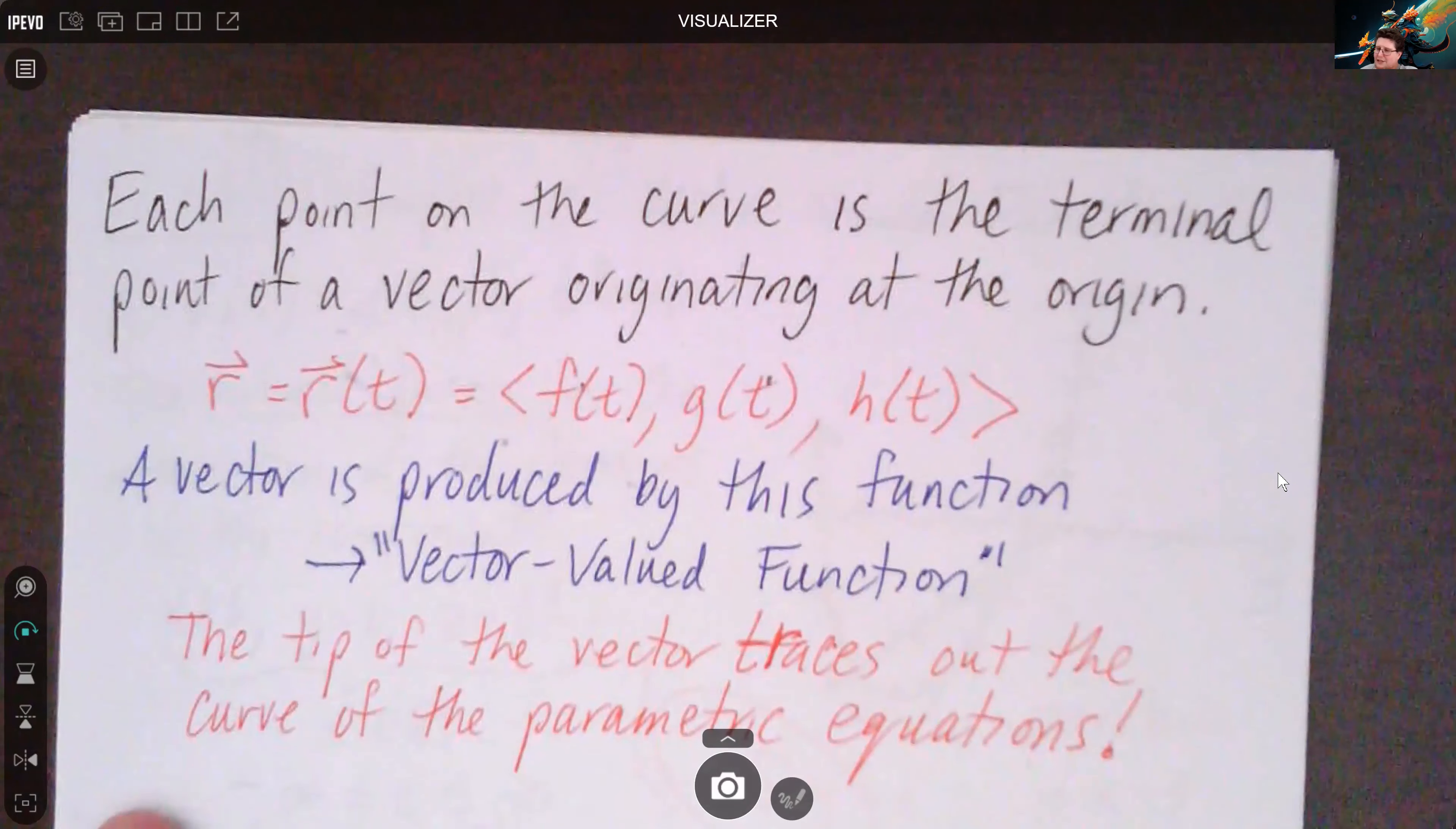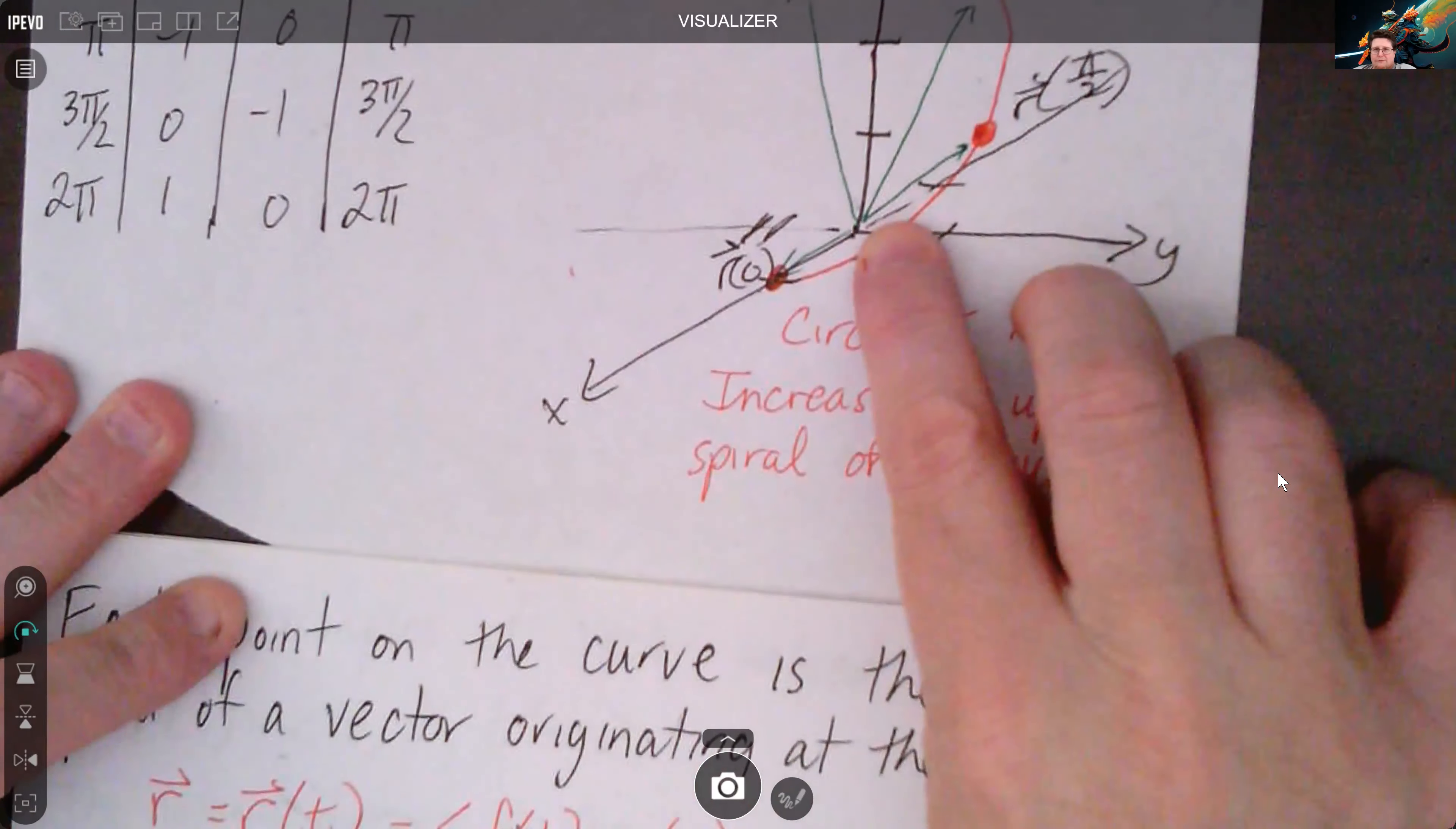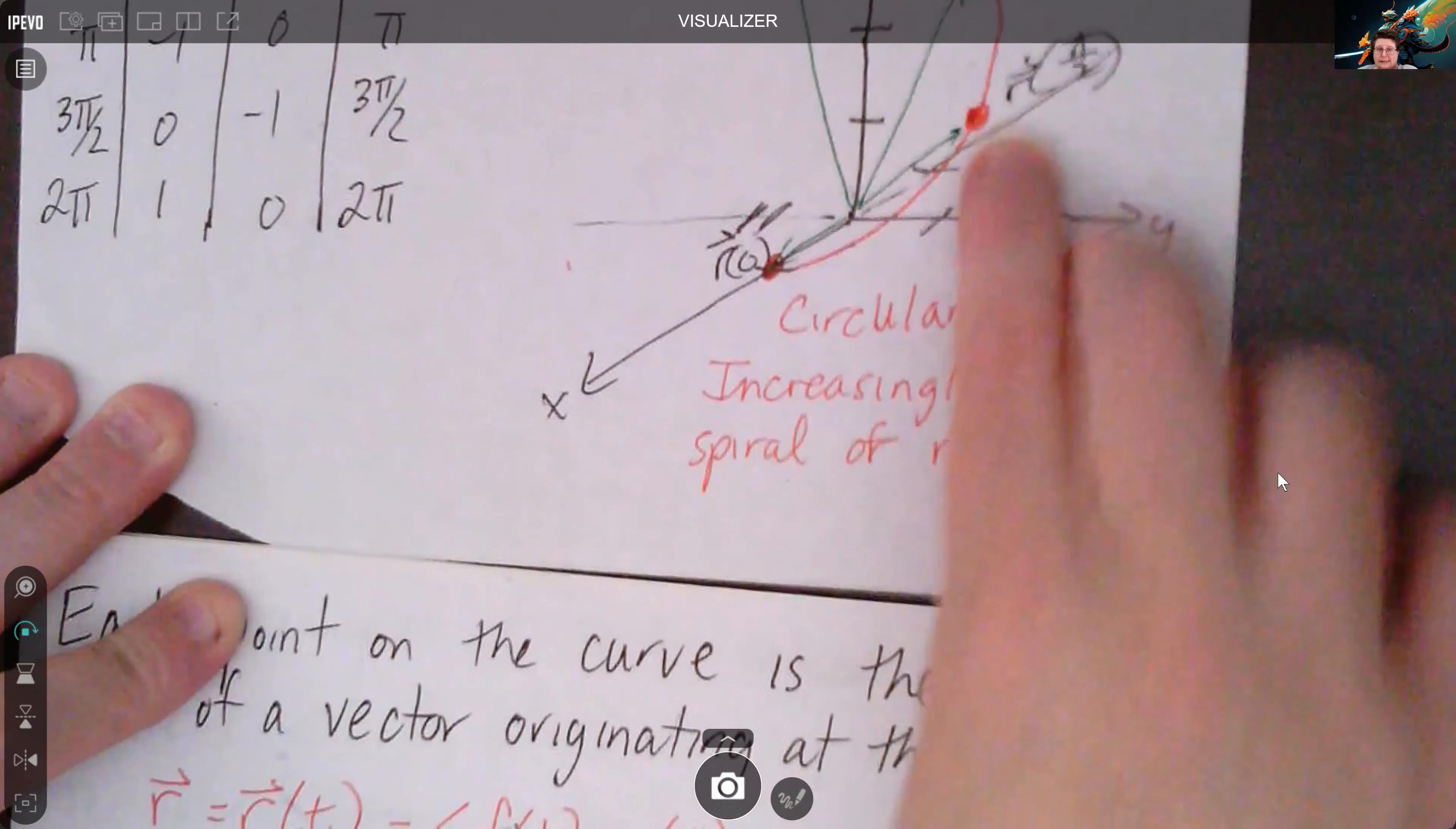So what I was saying is each point on that curve is a terminal point of the vector, and I was showing that here we start at the origin and the vectors radiate out from the origin to the terminal point, and that this kind of traces the path of the helix.